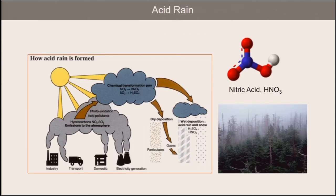Before I move on to the burner designs, let me mention the other problem caused by nitrogen oxides: the possible formation of acid rain. As you can see in the slide, hydrogen, nitrogen, and ozone (O3) combine to form acid rain, or nitric acid, which is a defoliant and a hazard to human health in extreme cases. So just another reason to control these nitrogen emissions as much as we possibly can.